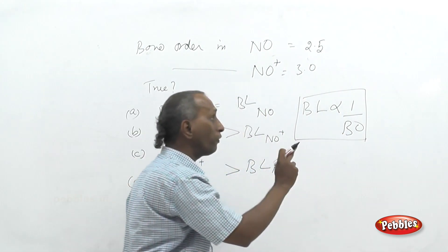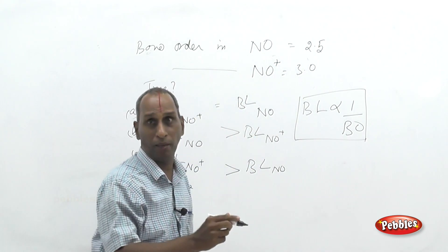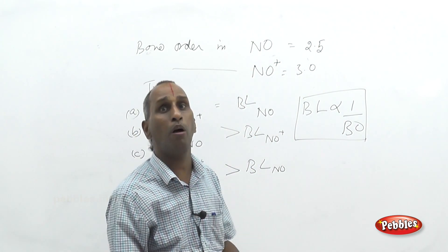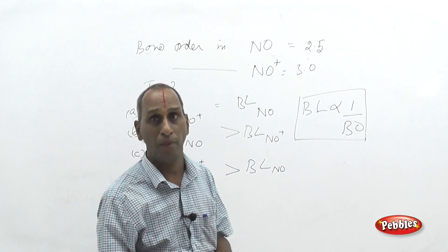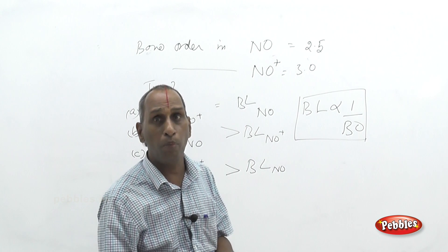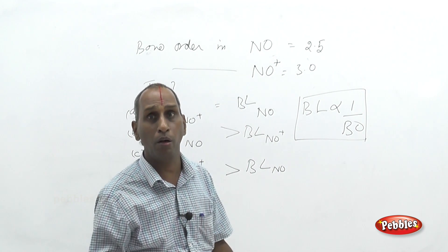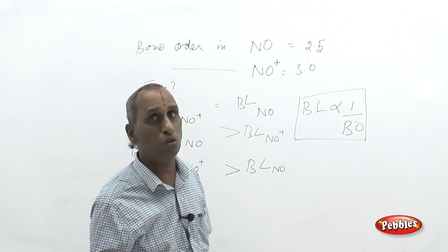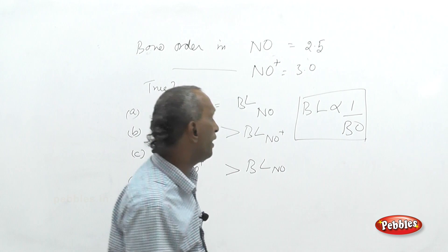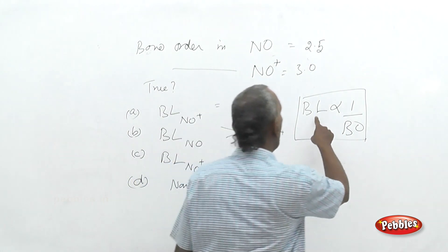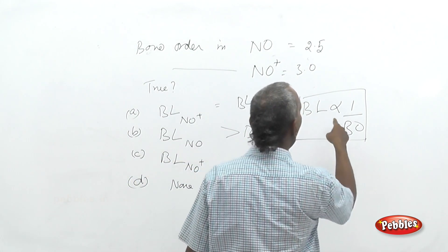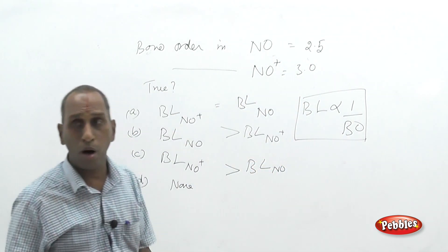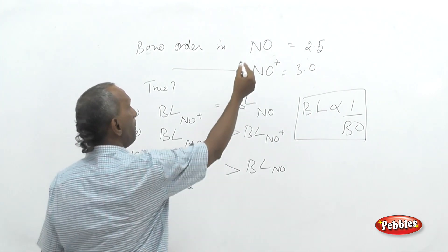The number of bonds is essentially the bond order. C triple bond means bond order 3, C single bond means bond order 1, C double bond means bond order 2. In general, bond length is inversely related to bond order.